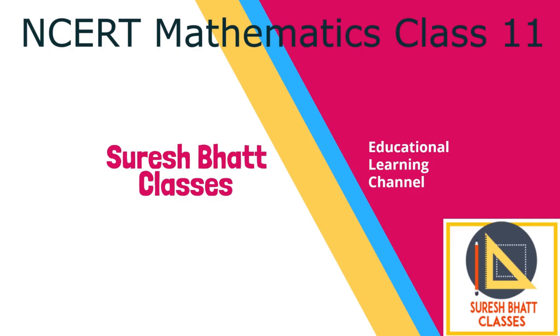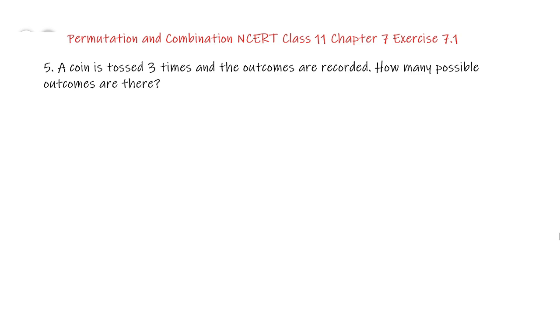NCERT Class 11 Chapter 7 Exercise 7.1 Question number 5. A coin is tossed 3 times and the outcomes are recorded.